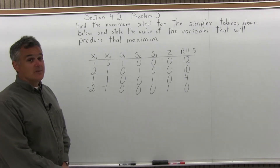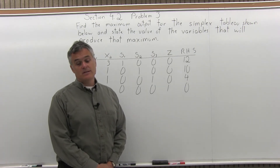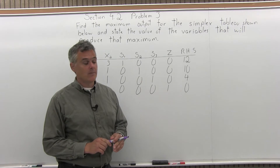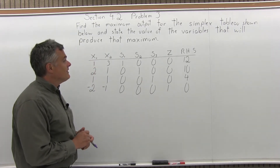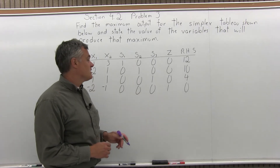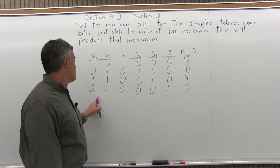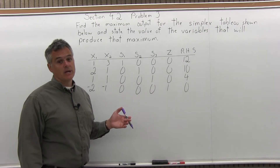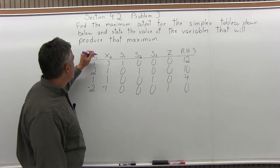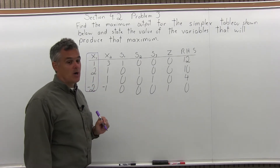In order to maximize this, we have to find the correct pivot and pivot the tableau and see if we have more negatives in the bottom row or if we're done. To find the pivot element, we first find the pivot column by finding the most negative value in the bottom row. In the bottom row, I have two negative values, negative 2 and negative 1. Negative 2 is more negative than negative 1, and it occurs in the x1 column. So, the x1 column will be my pivot column.